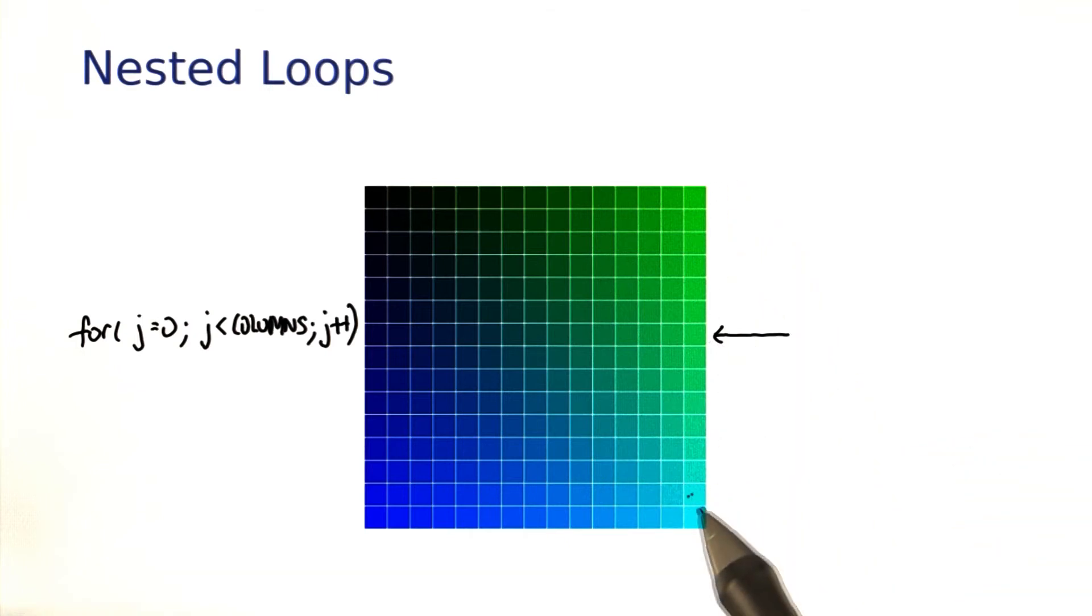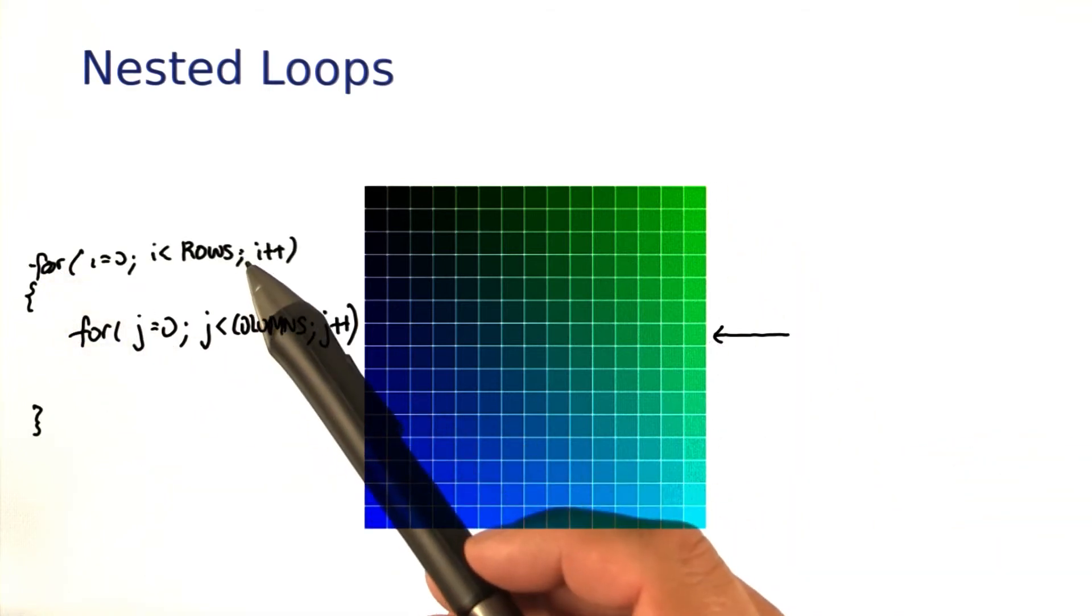To get to all rows, I need another loop. And there you have it, a loop inside a loop, nested loops.